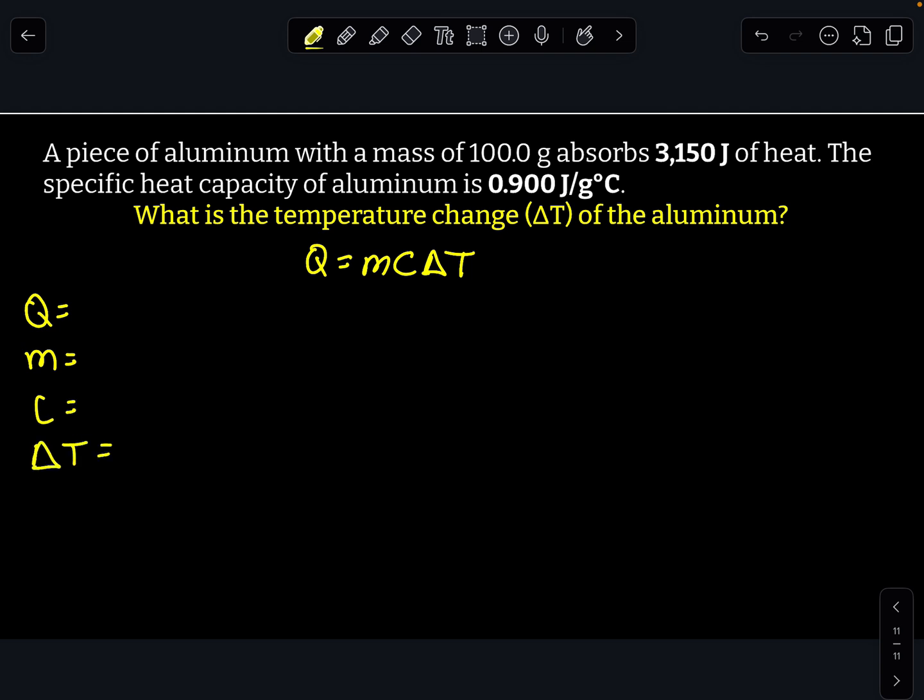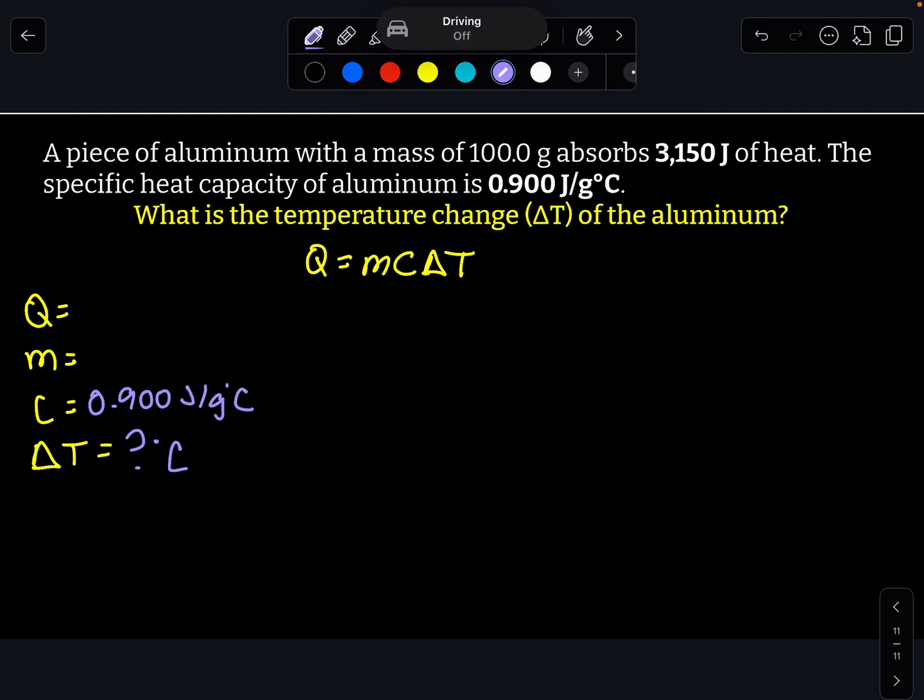I'm going to write my variables down the side and plug in what I know. So delta t, I don't know, that's actually what we're solving for. So I know that's going to be in degrees Celsius. My c is 0.900 joules per grams degrees Celsius. My m is 100 grams.